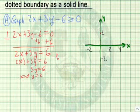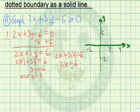How about if we now put in 0 for y and find the x value? So 2x equals 6, x equals 3, and y equals 0. So we have 3, 0. So the first thing is we graph the boundary as a dotted line.